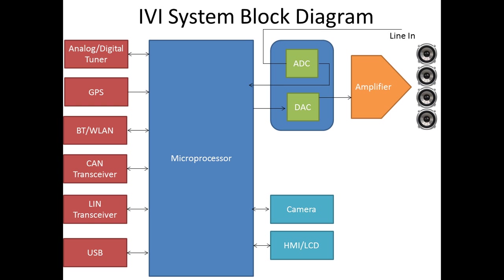The GPS module provides GPS signals to the infotainment system, primarily used when the navigation feature is active. The BT/WLAN module provides Bluetooth or Wi-Fi connectivity. The CAN transceiver enables communication between different ECUs on the CAN network, which is standard in automotive environments. Additionally, a LIN transceiver supports the LIN communication protocol, and a USB block provides basic USB connectivity to the infotainment system.